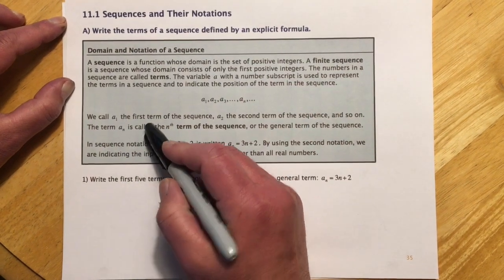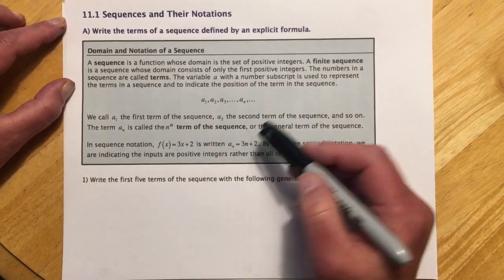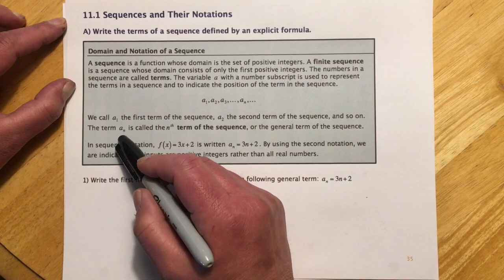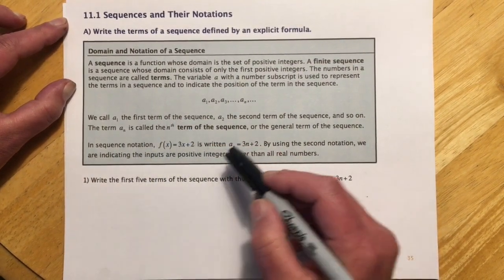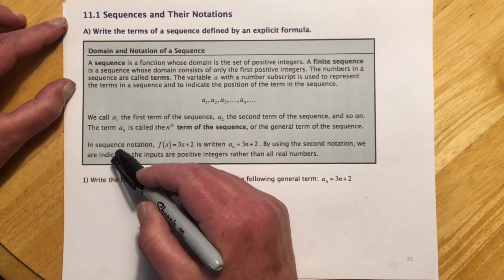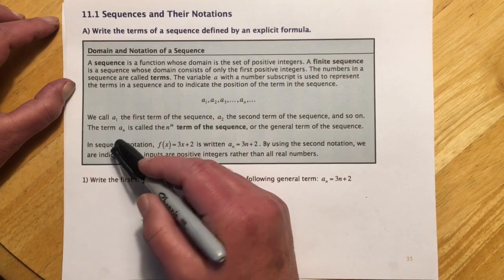We call a sub 1 the first term of the sequence, a sub 2 the second term, and so on. a sub n is called the nth term of the sequence, so we're going to see a lot of a sub n's and nth terms, and so this is standing for some general form or some general term.